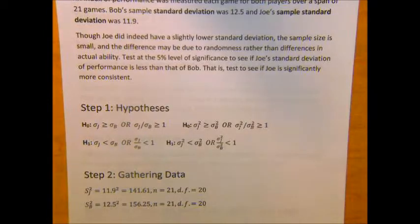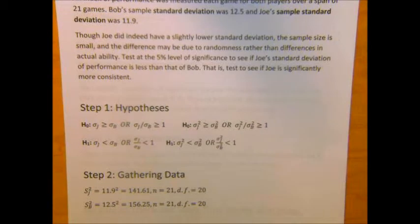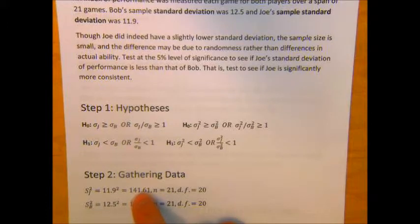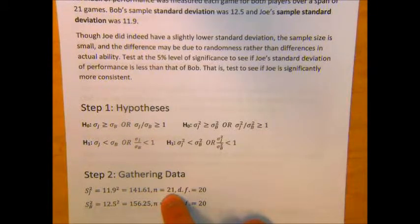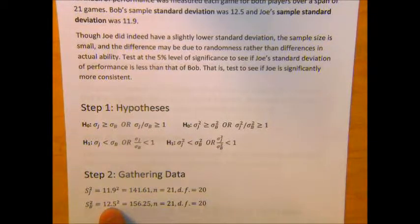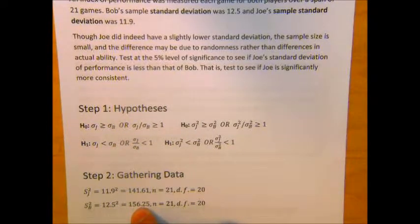In step 2, let's gather the important information. Joe's sample standard deviation was 11.9, and thus his sample variance is 11.9 squared, or 141.61, on a sample size of 21 with 20 degrees of freedom. Bob's sample standard deviation is 12.5, which leads to a sample variance of 12.5 squared, or 156.25. He also had 20 degrees of freedom on a sample size of 21.